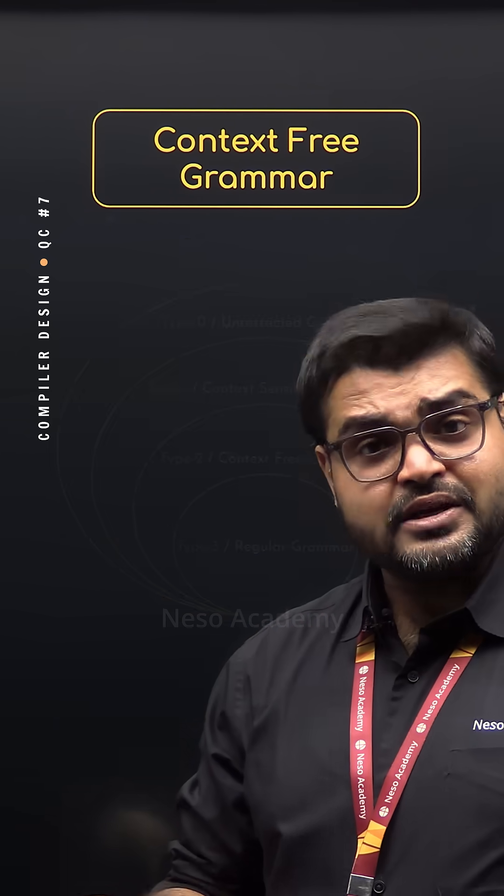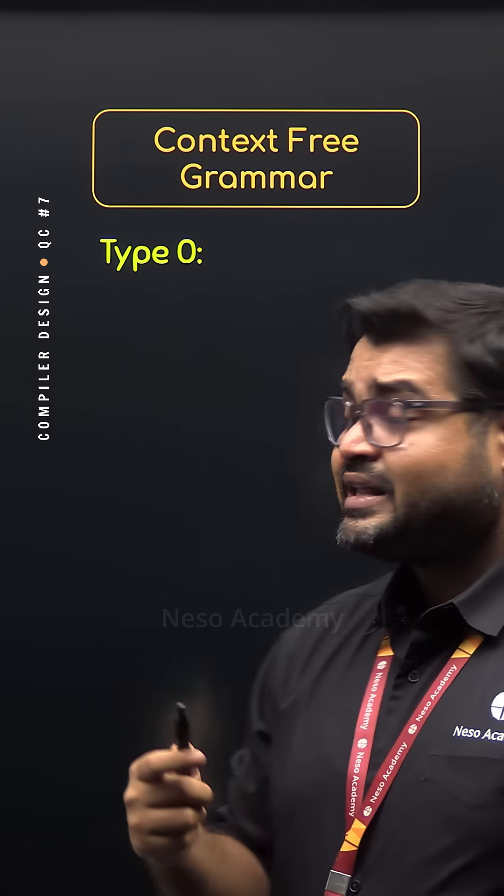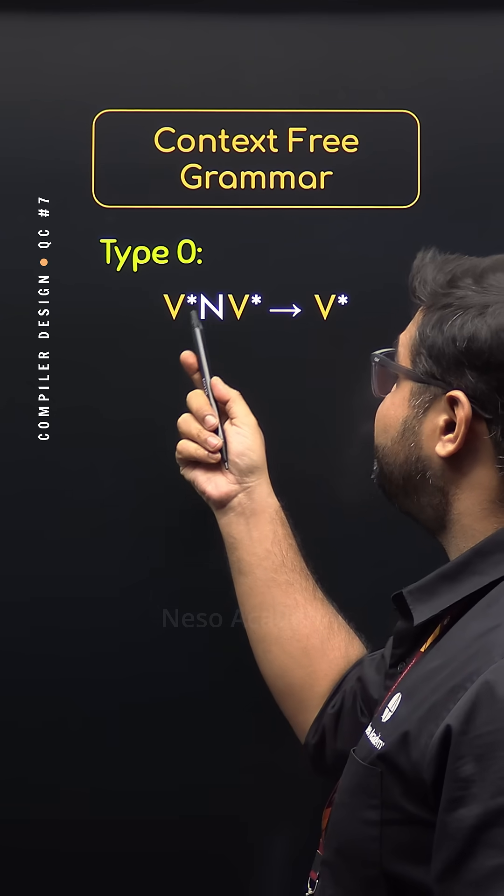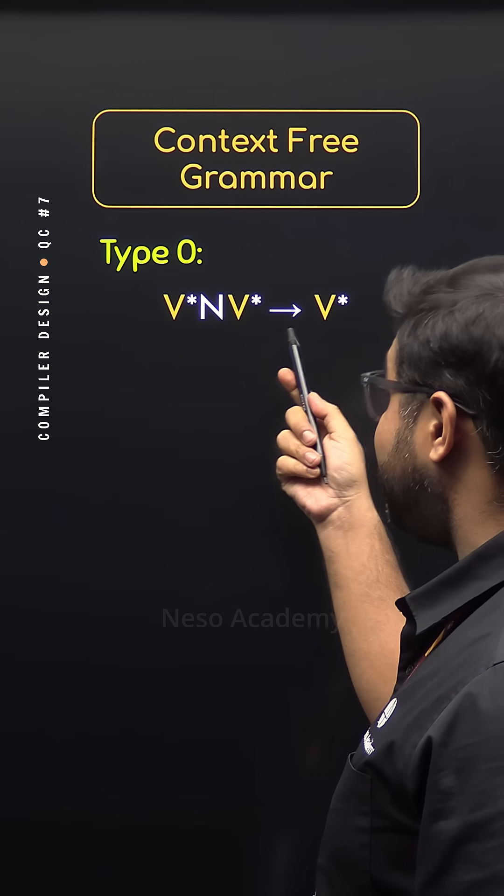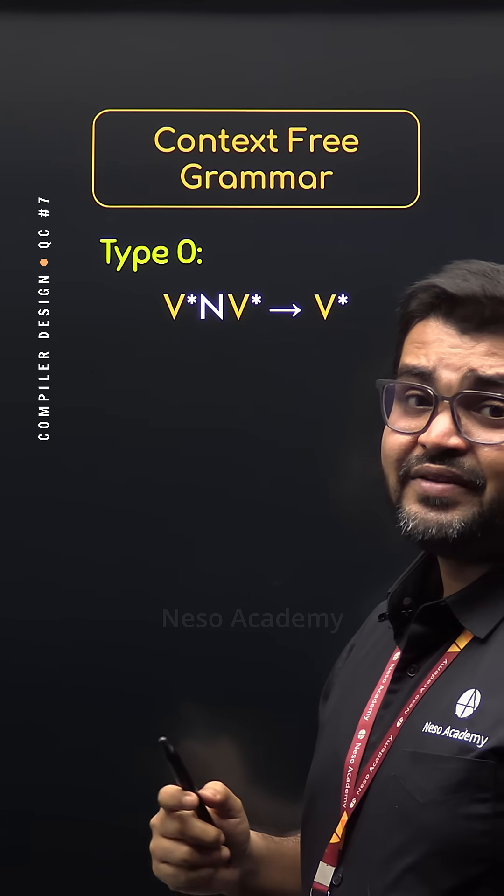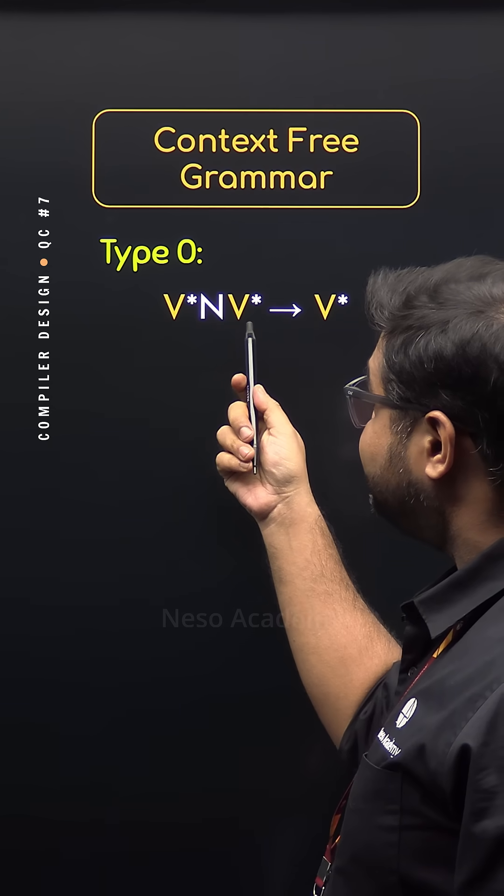In case of Type 0 grammars, we already know the production rules are of the form V*NV* that can be rewritten as V*. We have at least one non-terminal on the left-hand side so that the production rule can produce something.